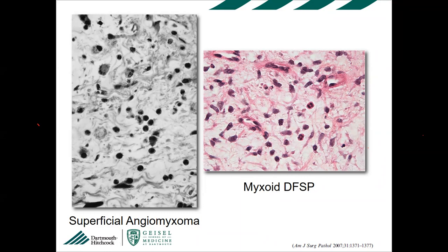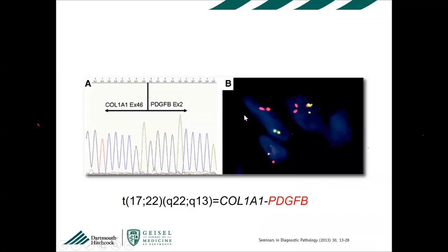Molecularly, DFSP has a characteristic translocation: unbalanced translocation or supernumerary ring chromosome in adults, or a balanced translocation in children, involving COL1A1-PDGFB. This leads to overproduction of PDGFB by tumor cells, constitutive activation of the PDGFB receptor (a type III tyrosine kinase receptor), and oncogenic signaling. This fusion is found in about 95–96% of cases. RT-PCR may give false negatives in myxoid cases due to hypocellularity.